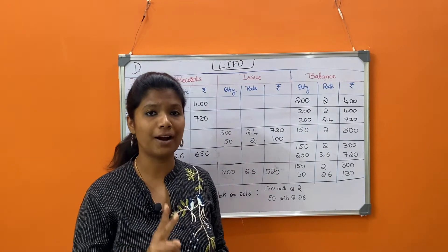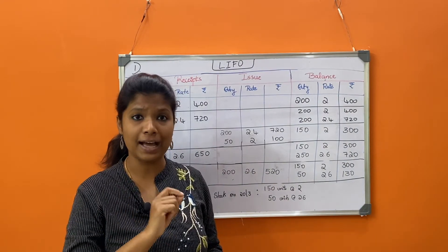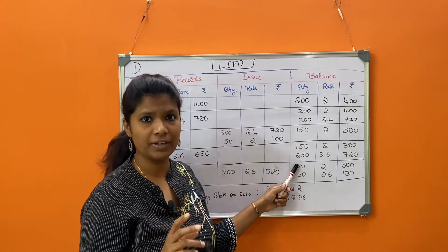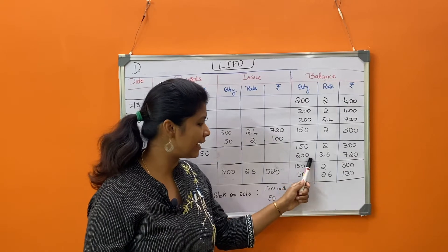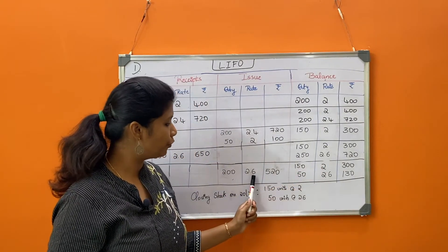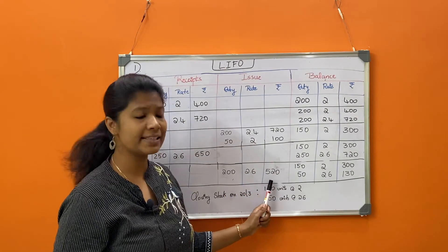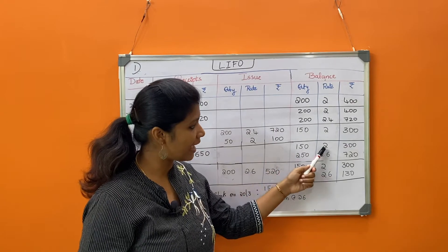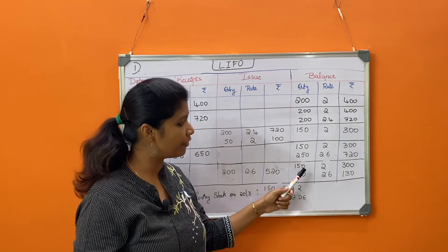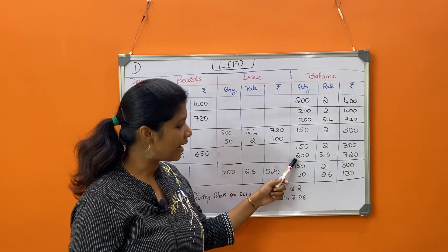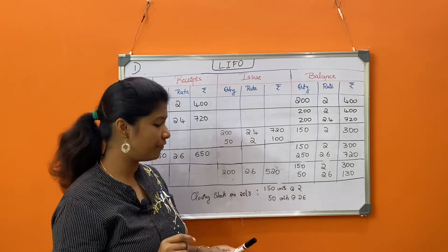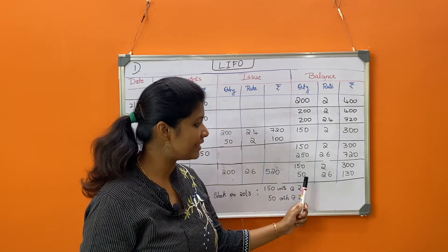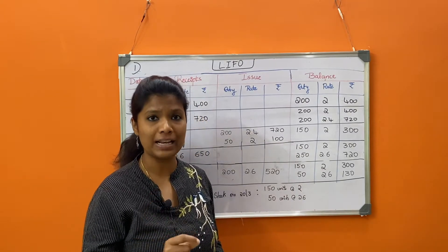20th March: issuing 200 units. Under LIFO, start with the last batch — 250 units at rate 2.6. We only need 200, so issue 200 at rate 2.6, value 520 rupees. Balance: carry forward 150 at rate 2, value 300 rupees, and from the second batch: 250 minus 200 = 50 units at rate 2.6, value 130 rupees.